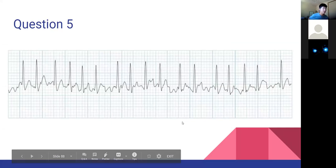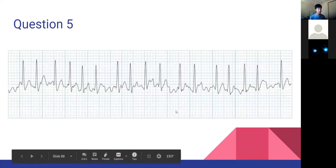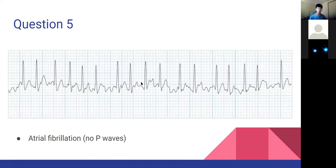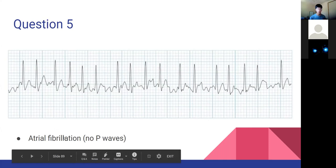This ECG also looks messy - it is AFib or atrial fibrillation. We can see this because there's no presence of distinctive P waves. The small things in between are probably T waves, because if you have large ventricular depolarizations, you need a T wave to repolarize. If you ever see an ECG where you can't identify P waves, that's atrial fibrillation. To summarize: atrial fibrillation has no P waves, whereas atrial flutter has that jagged sawtooth pattern.